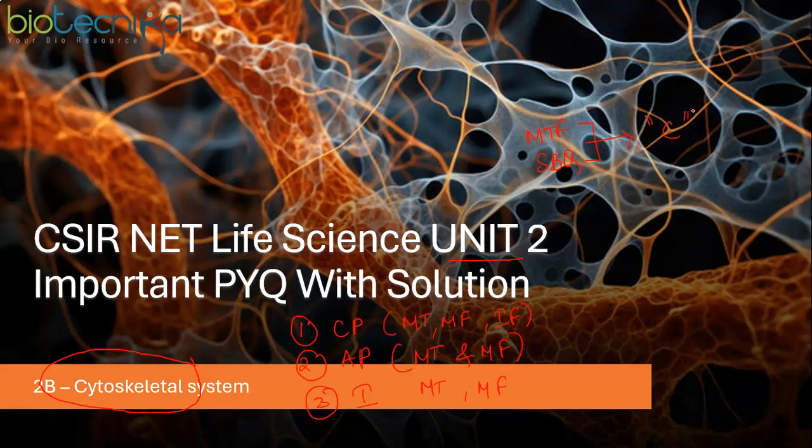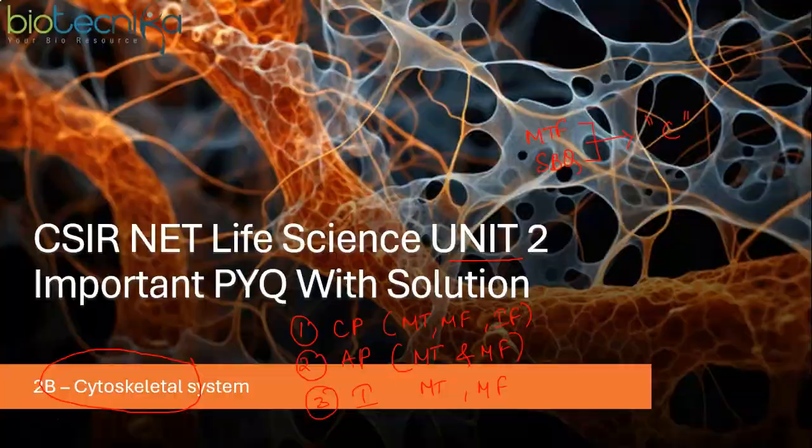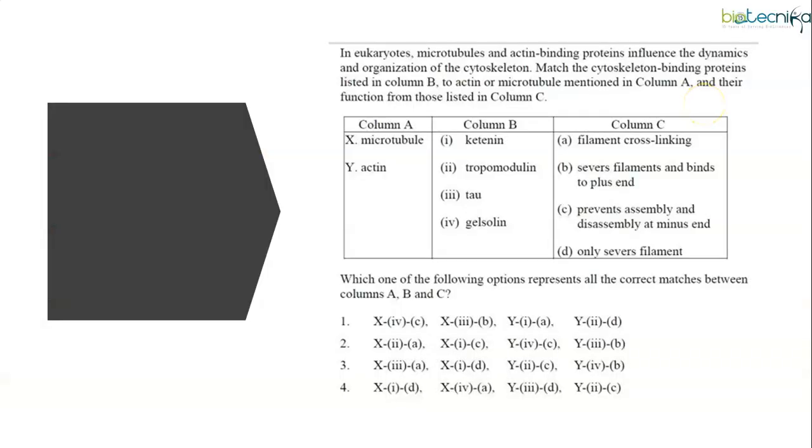Let's look at the questions now. The first question is about microtubules and microfilaments, their corresponding accessory proteins and their relevant function. You have to be very clear with the categories of proteins and examples. The correct answer is option 3.